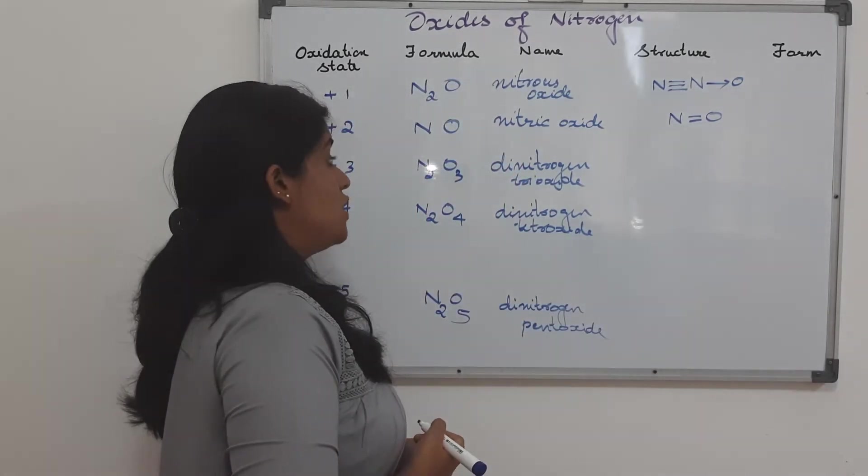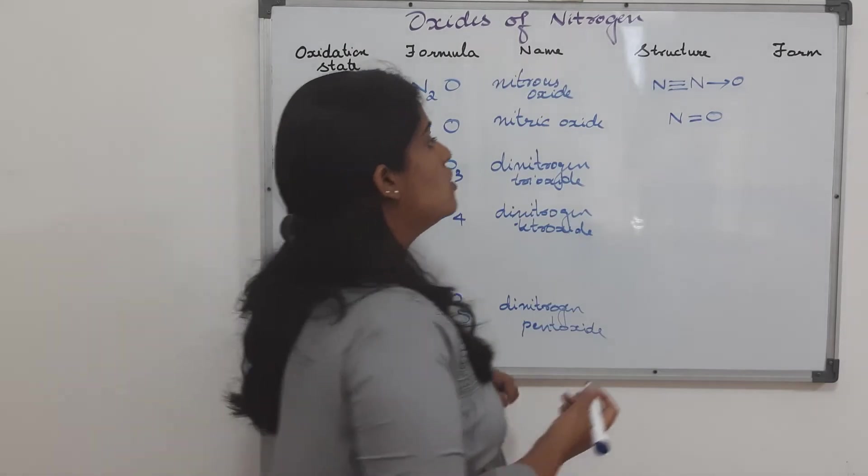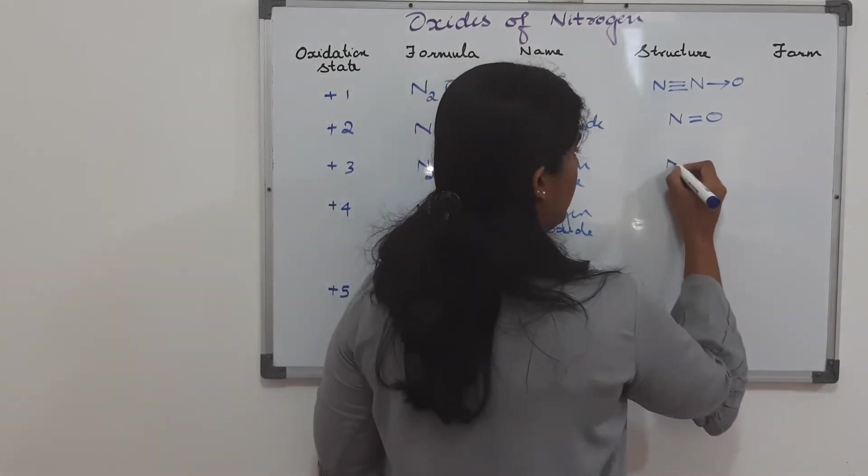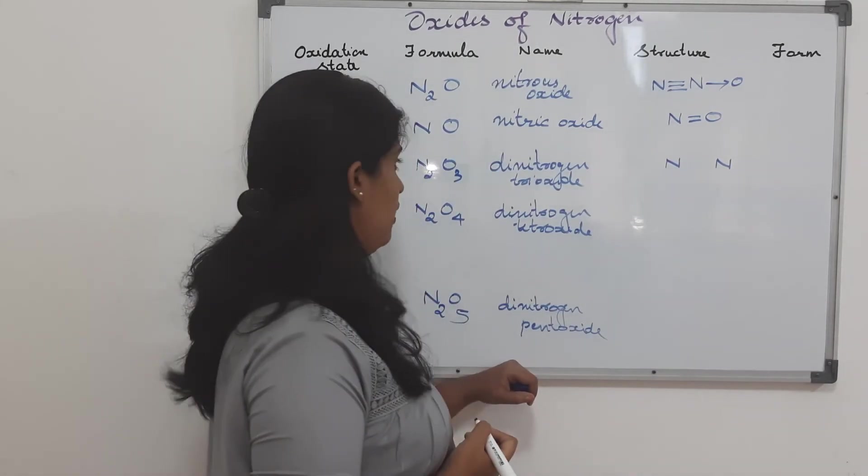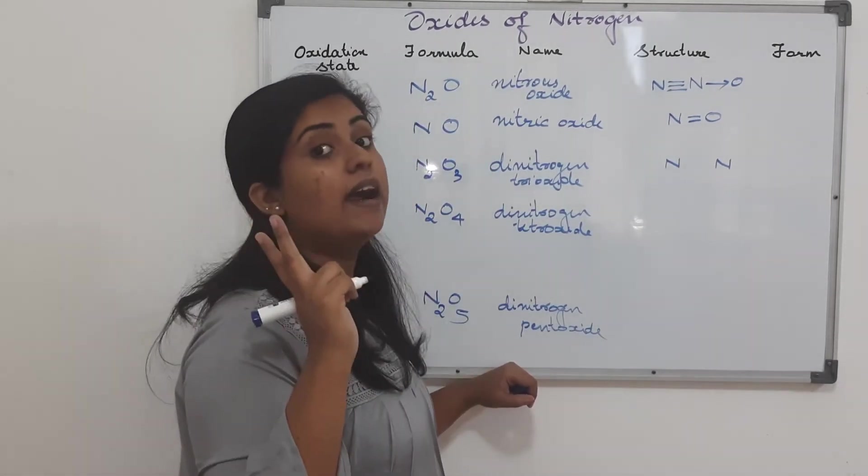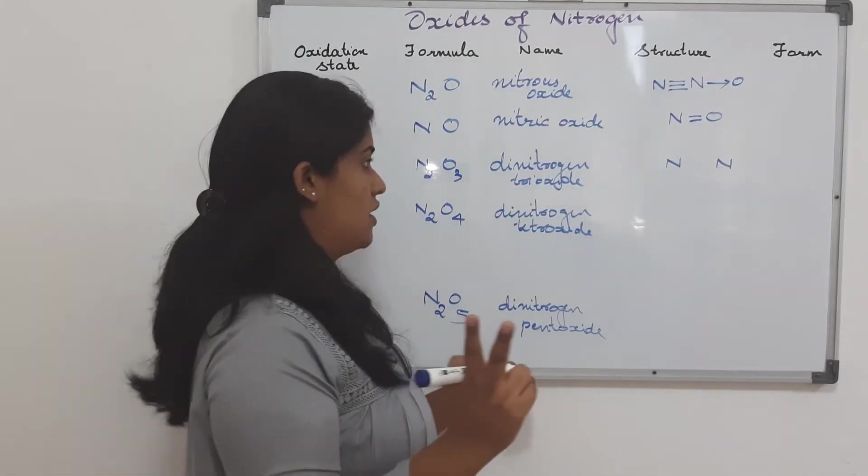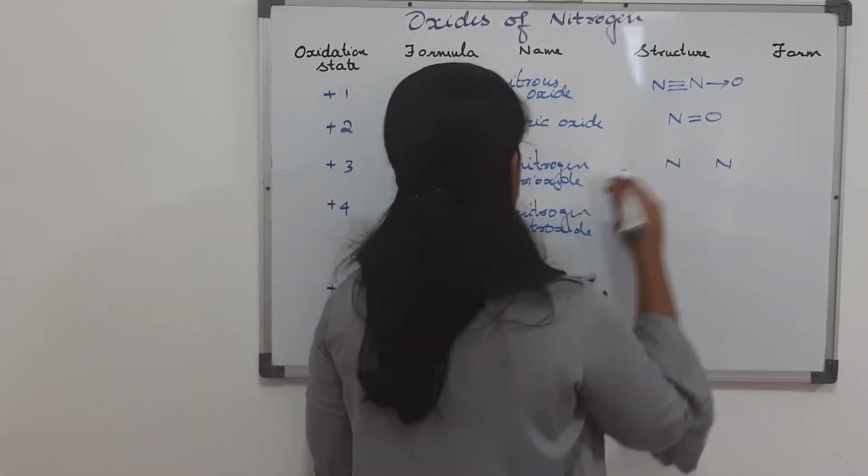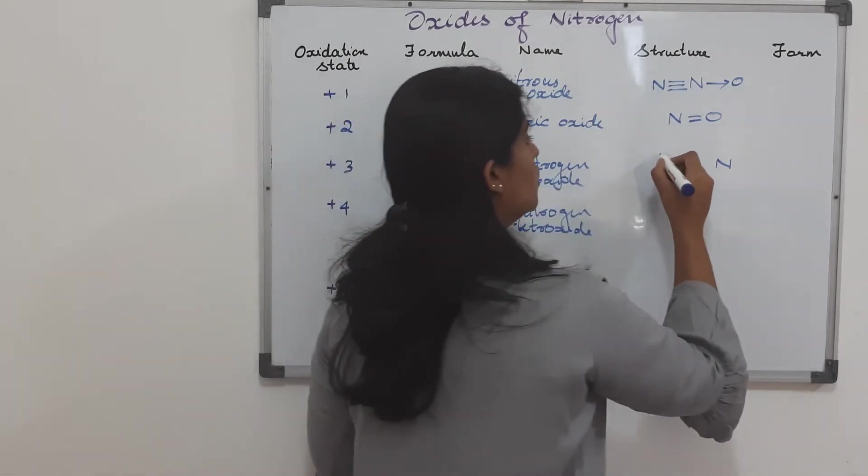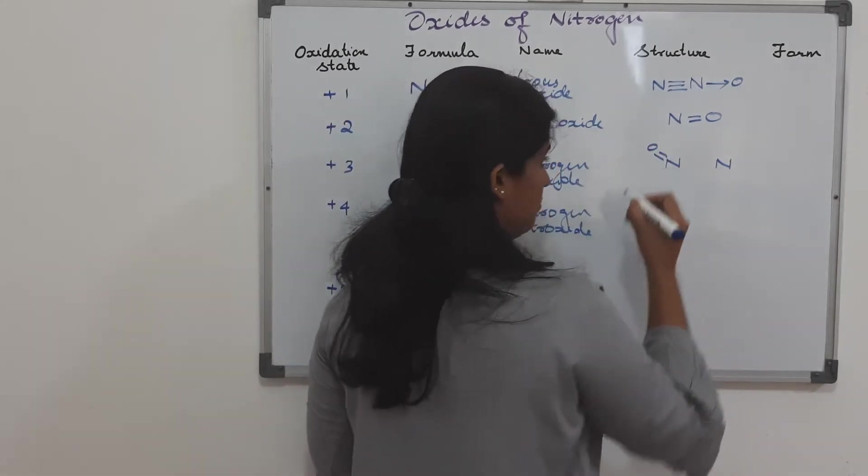Third one has two nitrogen and three oxygen. So, how will we put it? One nitrogen here, another nitrogen here. Every nitrogen I told can have a maximum of two oxygens. So, this nitrogen if I consider, I will give total of three oxygens there. So, one oxygen I give is double bonded.